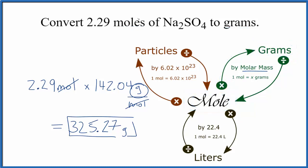If we were given grams and we wanted to go to moles, we'd do the reverse. We'd take the grams, we'd divide by the molar mass, and that would give us moles.